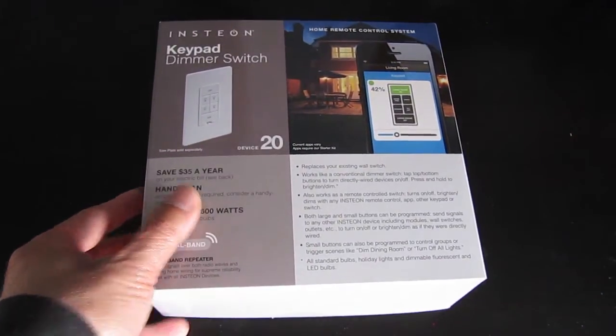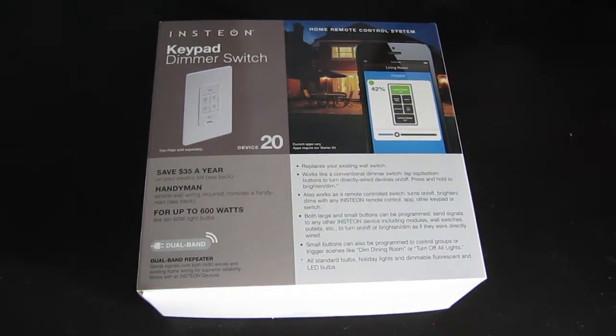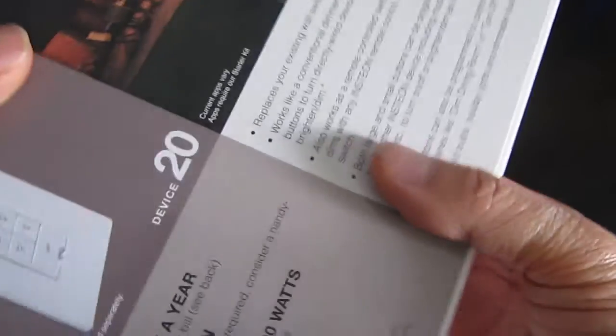Today I'm going to replace an existing wall switch with an Insteon Keypad Link 6 Button Dimmer. This dimmer can handle 600 watts and can be controlled with a smartphone or through X10 powerline commands.